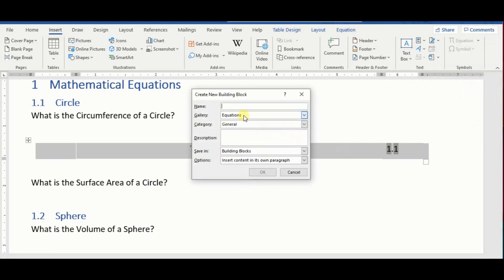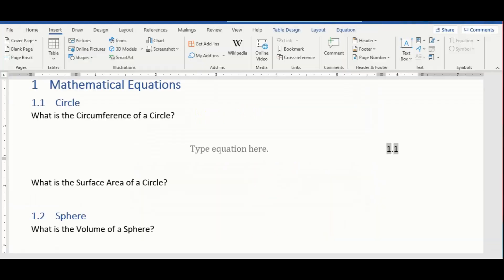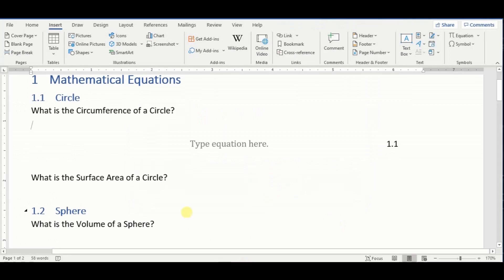Once you do that, you can name this template whatever you want. So we can name it equation number template. Okay, let me show you right there. So we can leave everything here as it is, and we click on okay. Great, so we have saved our template now.